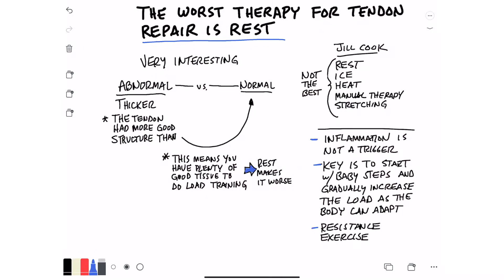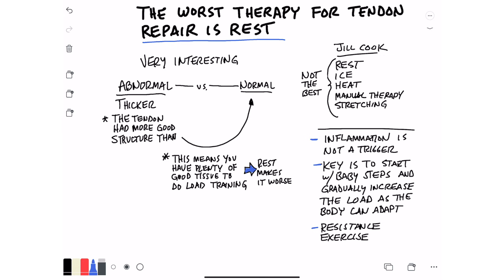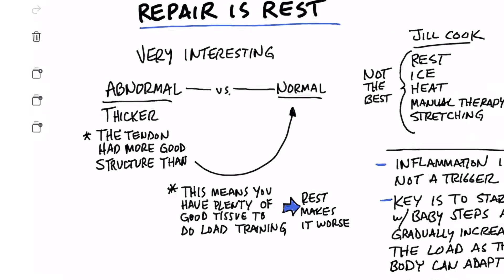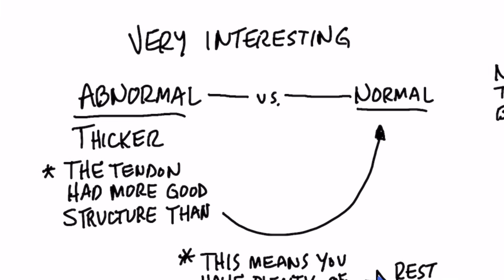There's some really interesting data by Jill Cook. I'm going to put her link down below. It was actually quite interesting because she was talking about a study that was comparing an abnormal dysfunctional tendon with a normal tendon and looking at the difference between both.